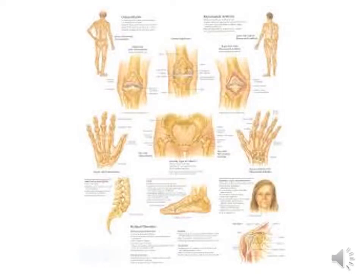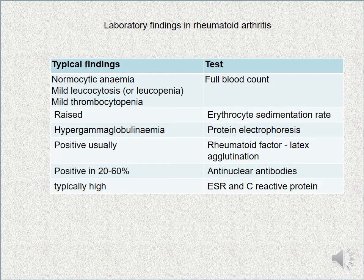The figure shows many joints affected by rheumatoid arthritis, mainly the small joints. For laboratory findings in rheumatoid arthritis: the blood count shows normocytic anaemia, monocytosis or leucopenia, and thrombocytopenia. The ESR — erythrocyte sedimentation rate — is increased, as in any chronic infection. Protein electrophoresis gives hypergammaglobulinaemia. Rheumatoid factor by latex agglutination is usually positive. Antinuclear antibodies are positive in 20 to 60% of cases. The ESR and C-reactive protein are typically high.